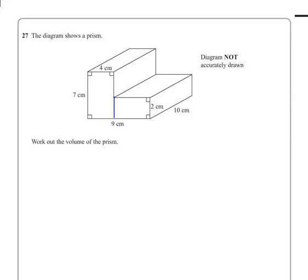Question 27. The diagram shows a prism. Work out the volume of the prism. Note the diagram is not accurately drawn.